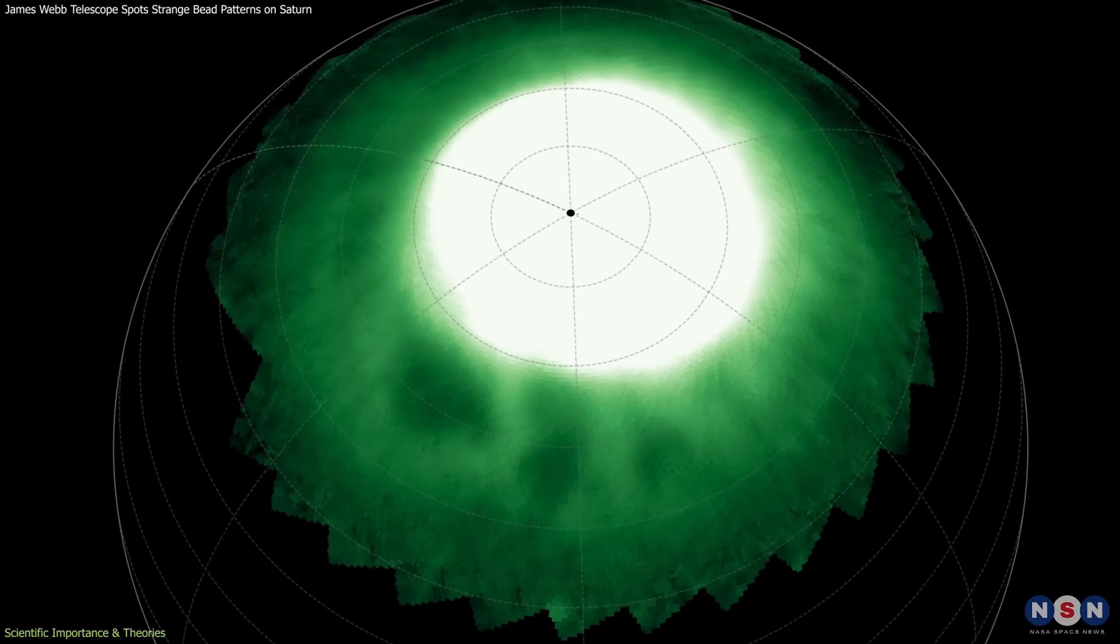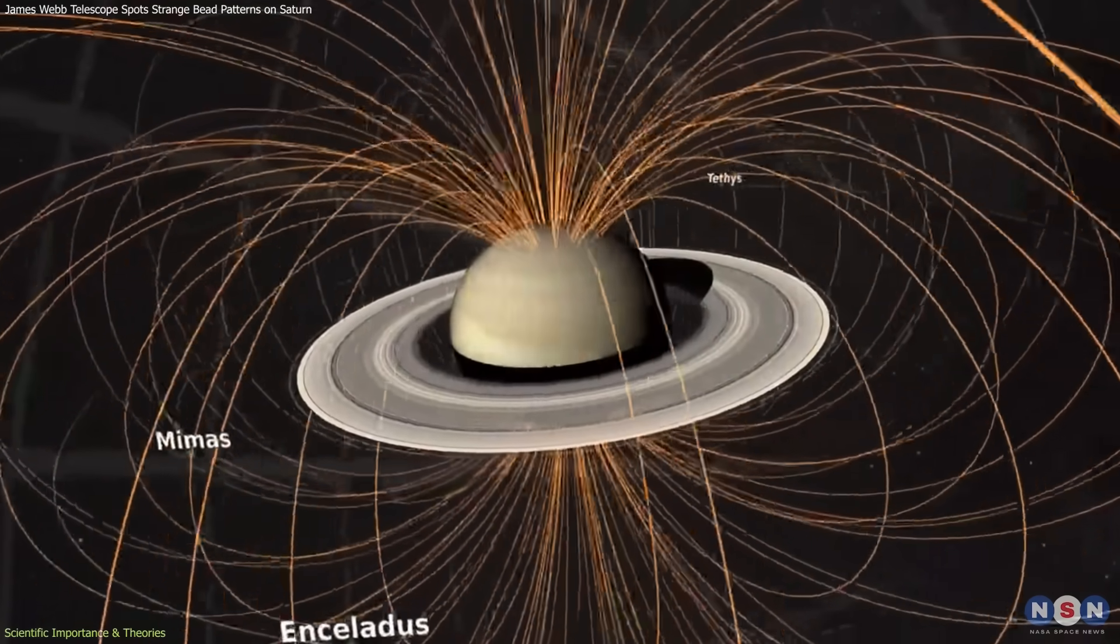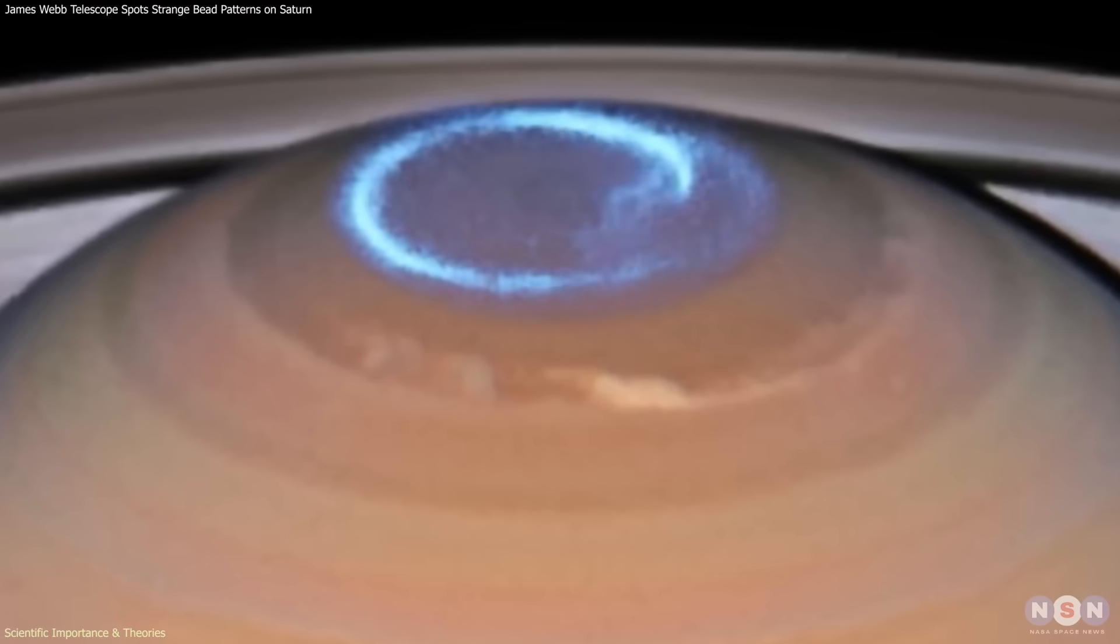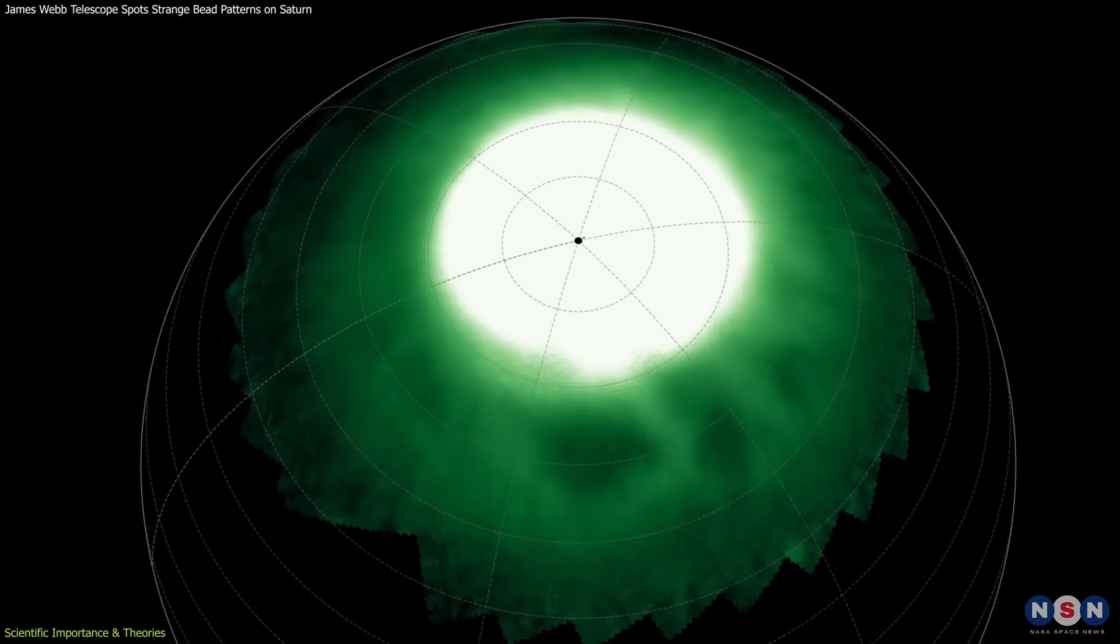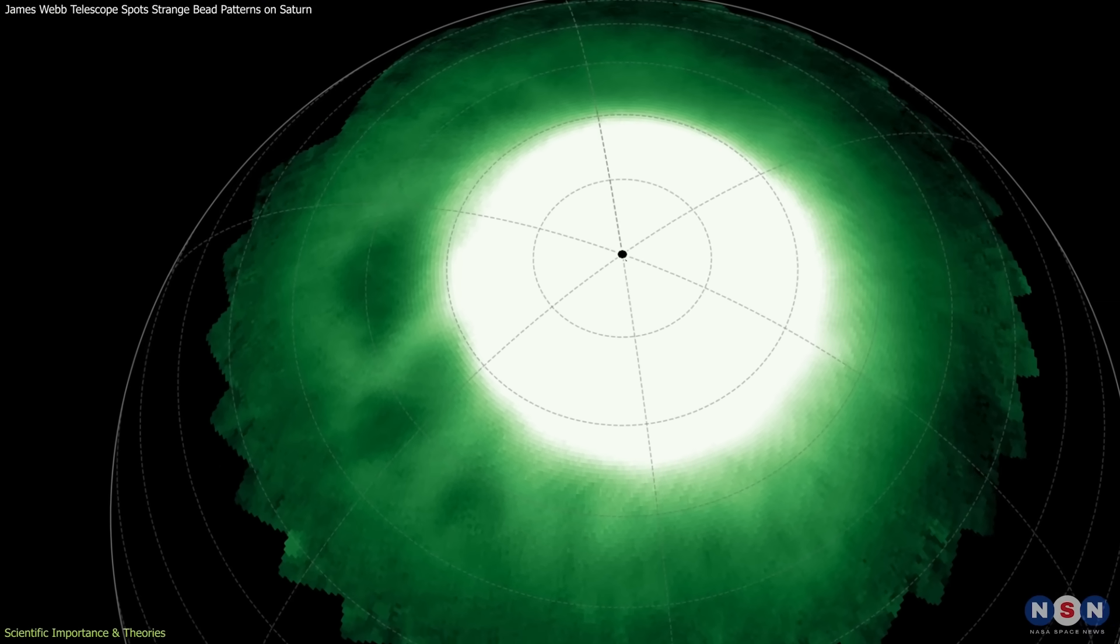The dark beads may be signs of localized interactions between its magnetosphere and its atmosphere. The planet's strong magnetic field funnels charged particles along field lines into the poles, powering auroras. Where those interactions vary in intensity, they could carve out bead-like gaps or patches in the ionosphere's glow.